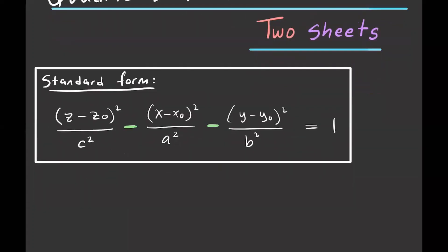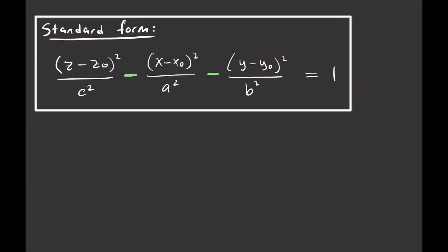Let's take a look at what the traces are, and I'll graph a general picture of this surface. The center is (X₀, Y₀, Z₀). Whichever axis does not have a negative sign determines the orientation — here, both X and Y terms are negative, so Z is positive, meaning the graph will open along the Z axis.